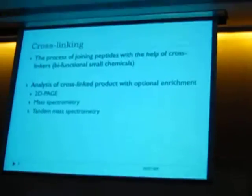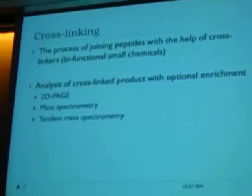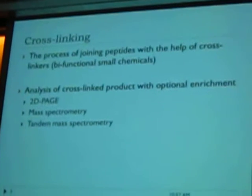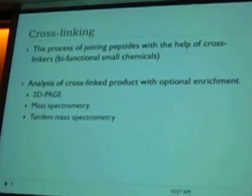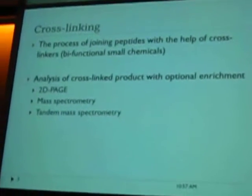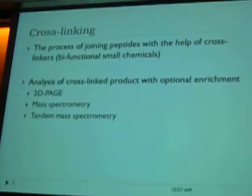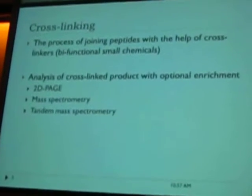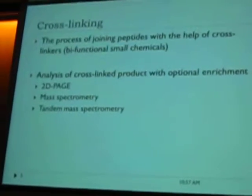One of such methods is cross-linking. Cross-linking, if I try to define it, is a process of joining peptides with the help of cross-linkers, which are small bi-functional molecules that can do that. It can then be coupled with mass spectrometry to analyze the cross-links and find out the pattern of cross-linking between different proteins.